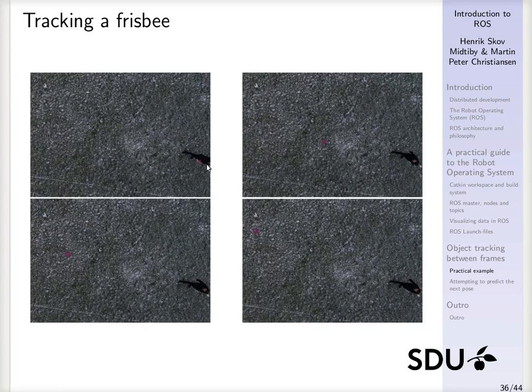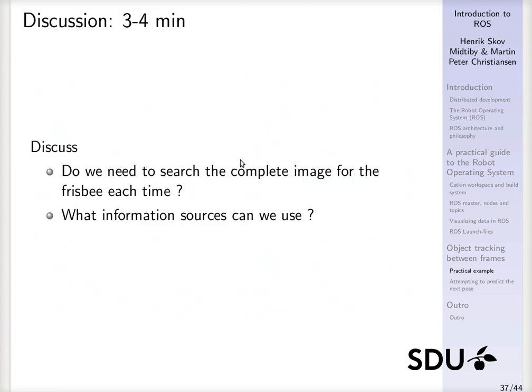So if we want to track an object like this in an image, and we only have limited processing power available, then it makes no sense to actually investigate the entire image to look for this frisbee. We can actually utilize information to focus our search on whatever region makes sense to look into. Try to think about whether we actually need to search the entire image for the frisbee for every frame.